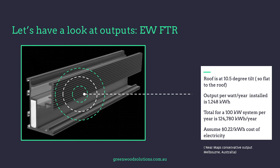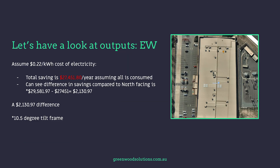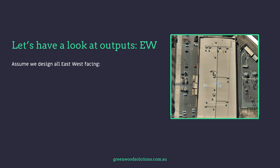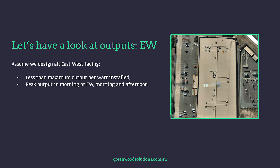Output per watt per year installed for east-west flat to the roof is 1.248 kilowatt hours. Total for a 100 kilowatt system is 124,780 kilowatt hours a year. Assuming 22 cents per kilowatt hour, total savings is $27,451 a year, assuming all is consumed. The difference in savings compared to north-facing at 10.5 degree tilt is $2,130. With all east-west facing, peak output is in the morning and afternoon, which could more closely match the consumption profile of the business.